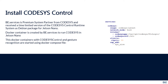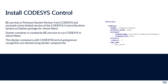B-Services is a premium partner of the CODESYS Group, and we received a time-limited version of the CODESYS runtime system for ARM platforms. We created a Docker container to run CODESYS on Jetson Nano. To simplify initialization of this container, we created a Docker Compose file and made sure that the real-time capabilities of the CODESYS control would be maintained even when running the application within the container.